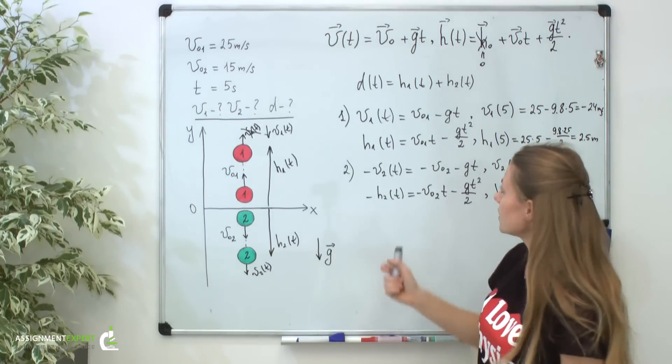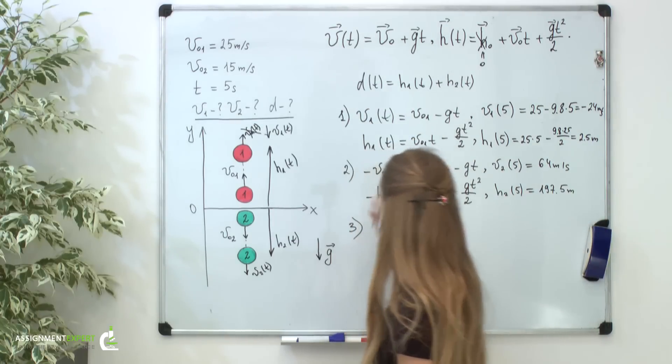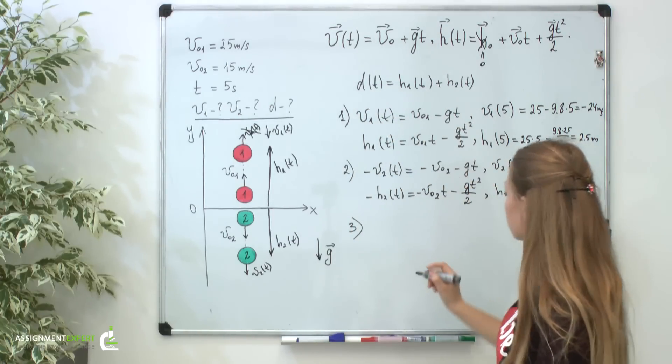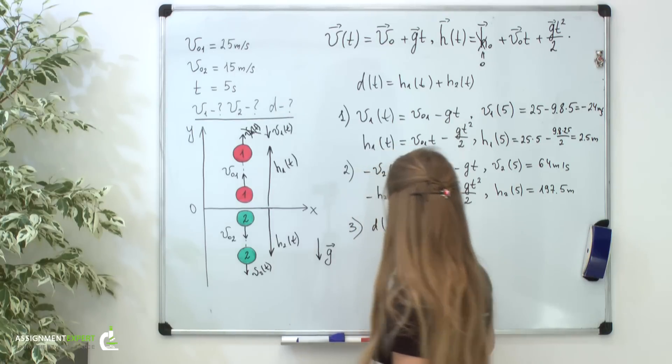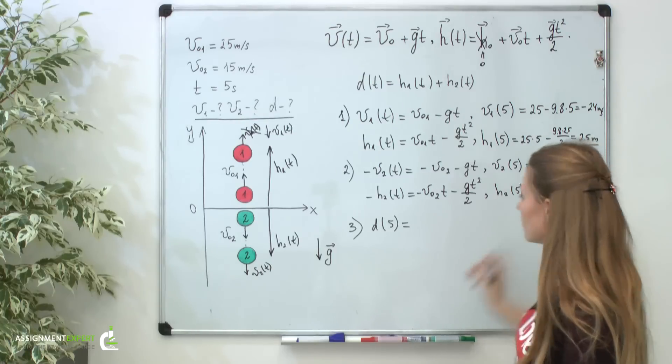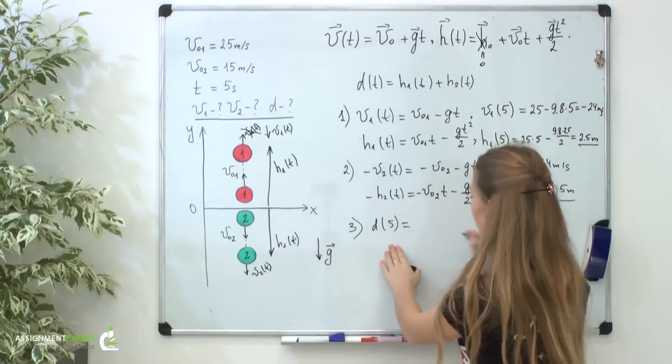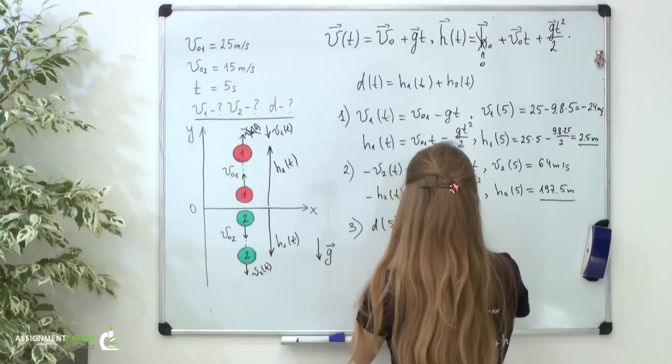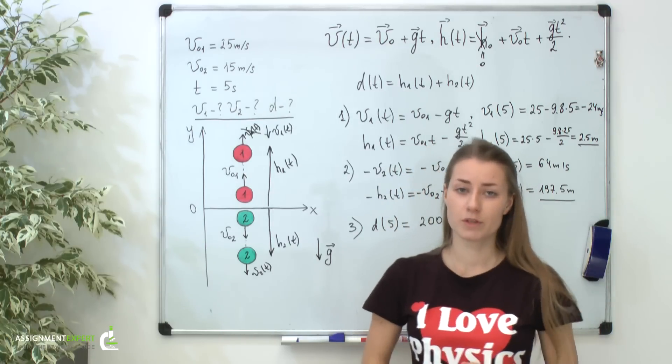Now, it's easy to find the distance d of t. Let's use this formula and write down the distance after 5 seconds is the sum of these two distances. If you add these numbers, you get 200 meters. Now, our problem is solved.